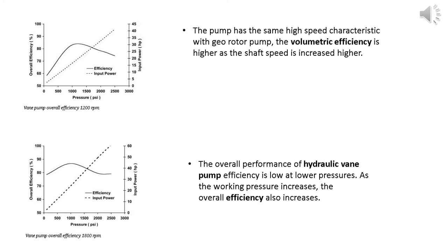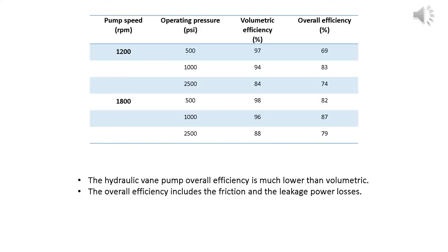There are two plotted graphs about the overall efficiency of vane pump at different speeds. The pump has same high-speed characteristic with georotor pump - the volumetric efficiency is higher as the shaft speed is increased. The overall performance of hydraulic vane pump efficiency is low at lower pressures. As the working pressure increases, the overall efficiency also increases. The hydraulic vane pump overall efficiency is much lower than the volumetric efficiency. The overall efficiency includes the friction and the leakage power losses.